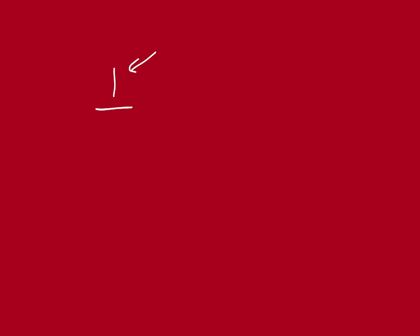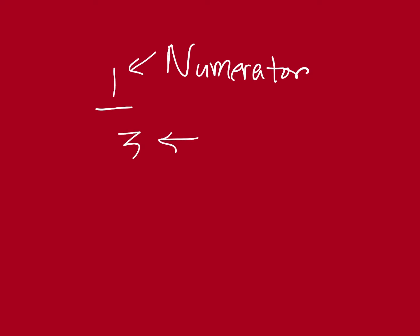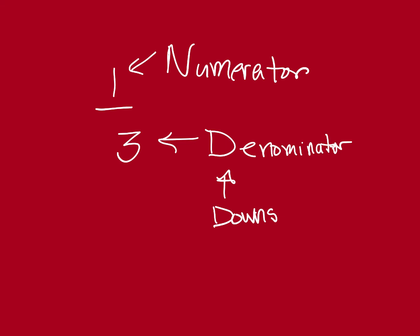I want to remind you that a reduced fraction is one where the numerator — which is the number on top — the numerator is always the number on top. And the denominator is downstairs. I like to remember that because the denominator starts with D, for downstairs.